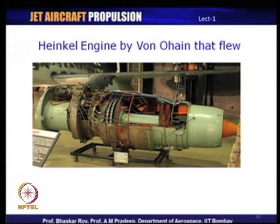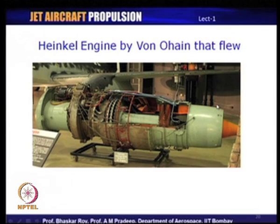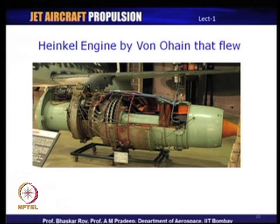On the other hand, the Heinkel engine created by Dr. von Ohain looks more like the various kinds of jet engines we see today. This is a picture taken in a museum, and you can see the various modern components: the compressors, the combustion chamber, the turbine, and the jet nozzle through which the hot jet finally comes out. This is von Ohain's concept of jet engine — the kind of engine that flew as the Heinkel aircraft. Heinkel was the businessman who supported Dr. von Ohain, who was indeed a proper academician and researcher, and this was the first jet engine that flew.